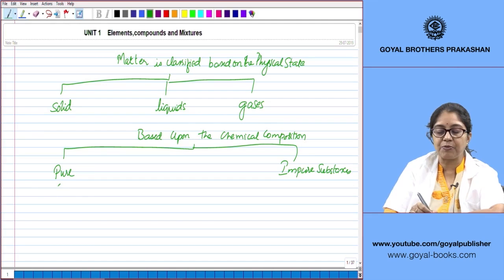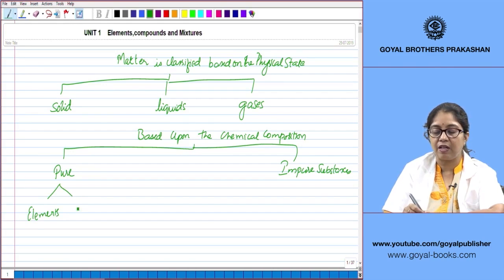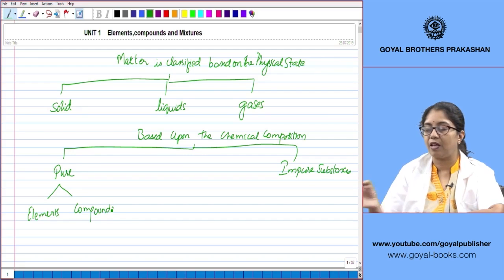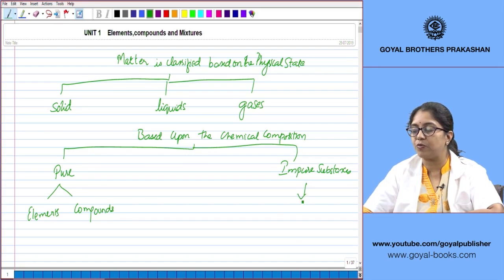The pure substances can further be divided into elements and compounds, and impure substances we have the mixtures.